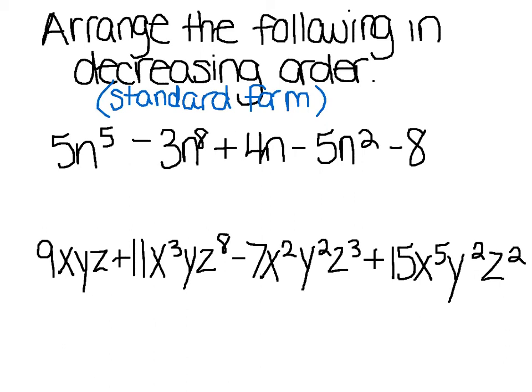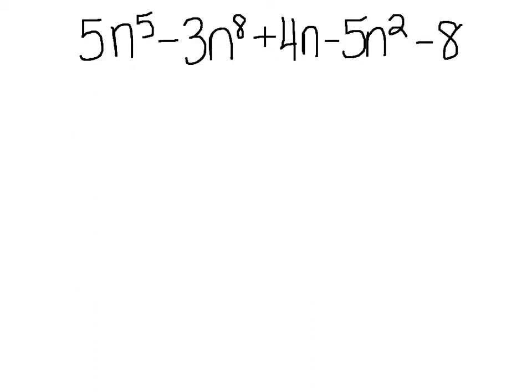All right, we're going to go through each problem one by one. Looking at this example, I only have the variable n. So I'm putting it in standard form based off of n. First thing I want to do, I'm going to change all subtraction signs to adding a negative number. So I'm adding negative 3n to the 8th, I'm adding negative 5n squared, and I'm adding a negative 8.